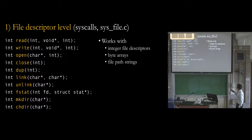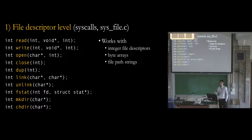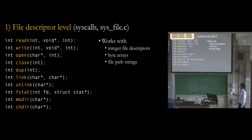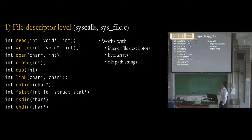At the file descriptor level, these are basically the system calls that applications can call. Keep in mind that applications work with integer file descriptors and byte arrays that store the data they're going to write or that hold the data being read. There are also string constants for referring to specific files — when you're opening a file, for example, you have to say what the name of the file is, and when you are linking or unlinking, you say the name of the file you want to deal with.